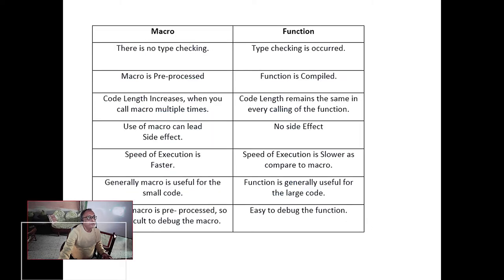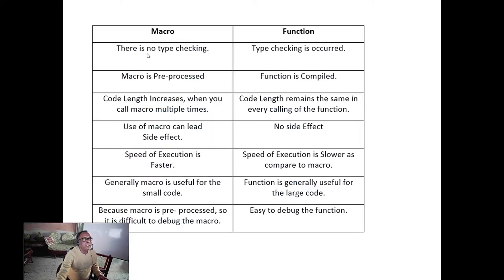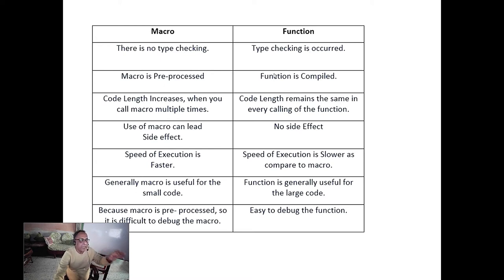The difference between macro and function is that macro has no type checking, whereas type checking is done for functions. Macro is pre-processed, so it adds to the code space, but it is faster because for a function you have to use the stack — you have to push all the things, making the function slower. Macro is faster but takes up space; code length increases. Use of macro can lead to side effects. Speed of execution is definitely faster, and a macro is used for small code.